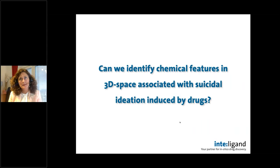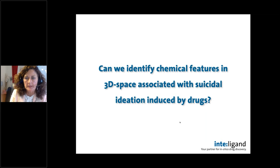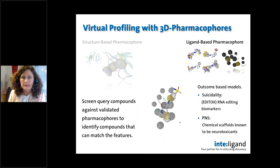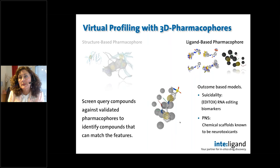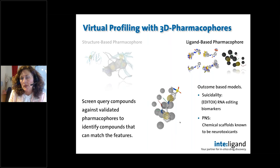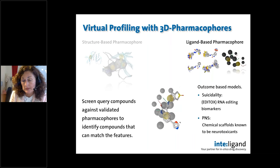The question is: can we really identify chemical features in 3D space associated with suicidal ideation induced by drugs? If we could, as we did with the PNS models and in previous projects like the Etox project where we successfully developed models for prediction of rodent and mice carcinogenicity, the idea would be to do multiple alignment experiments, generate 3D conformations of these chemical structures, and identify chemical features in 3D space that could be used to profile other molecules matching those features and indicate a potential risk for this type of outcome.